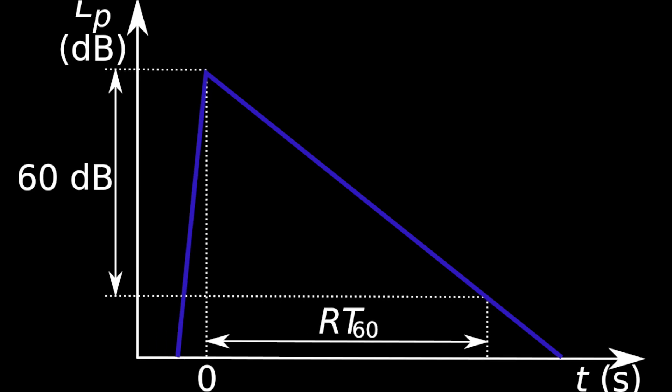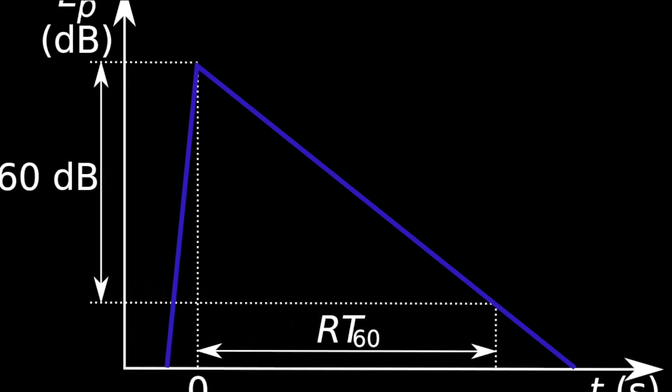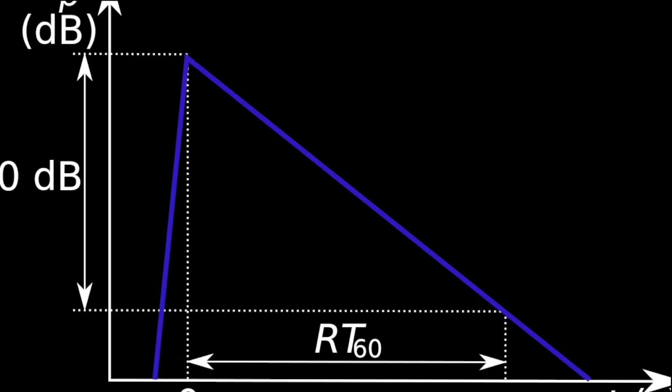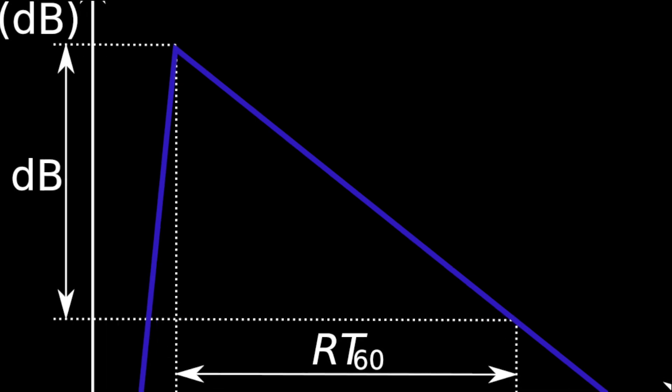We use the time it takes for the level to drop 60 decibels as the so-called T60 of the reverberant system. Longer T60s mean longer reverberation.